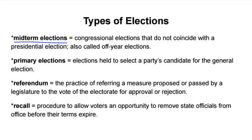Before you reach the general election, you often have primary elections in which each party is choosing a candidate for the general election. If each party only has one candidate that stepped up to run for that particular office, then there won't be a primary. But if there are multiple candidates for a particular party, there will be primary elections.